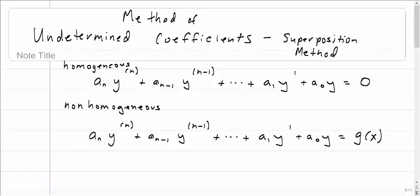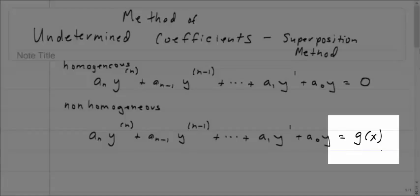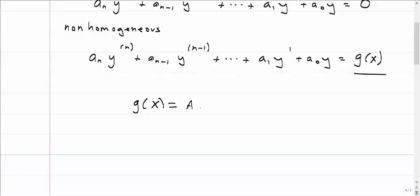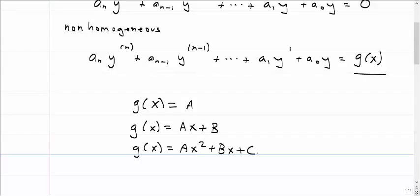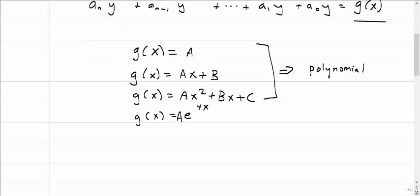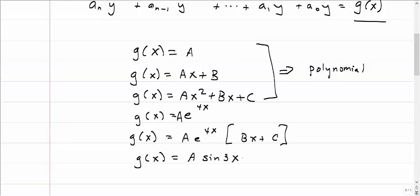This method works in only certain situations — it works when g(x) is in a particular type of form. It works if g(x) is a constant, a linear form, quadratic, or in fact any kind of polynomial. g(x) could also be an exponential, or the sum and product of these separate types of functions. g(x) can also be a sine or a cosine. That seems to cover quite a large number of functions.